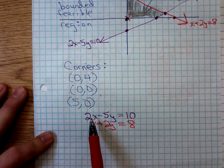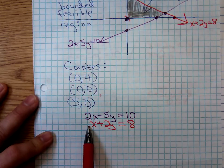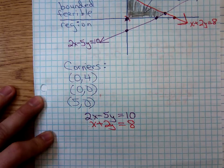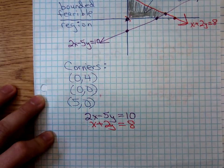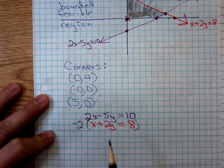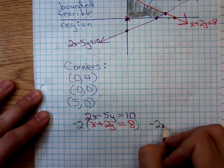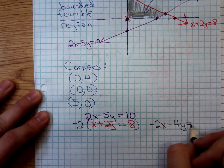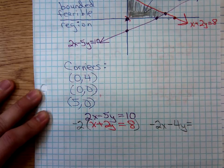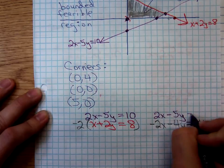I prefer elimination over substitution, so I'm going to use elimination. I'm going to try to eliminate the x's. If I have a 2x here, I want to change the coefficient in the second equation to negative 2x. We multiply the second equation by negative 2, giving us negative 2x minus 4y equals negative 16. The first equation stays as 2x minus 5y equals 10.